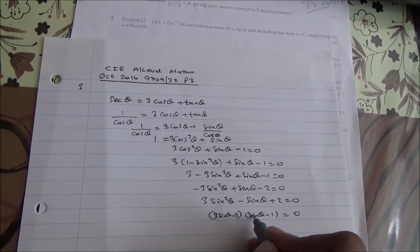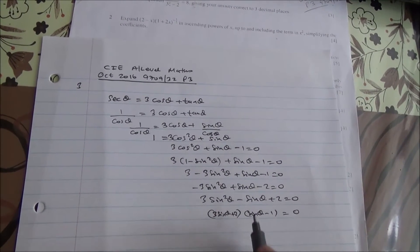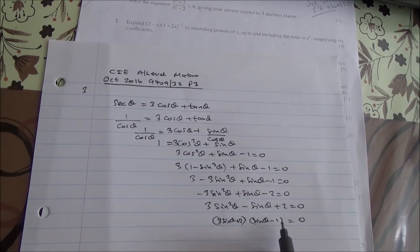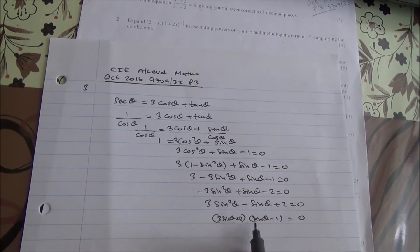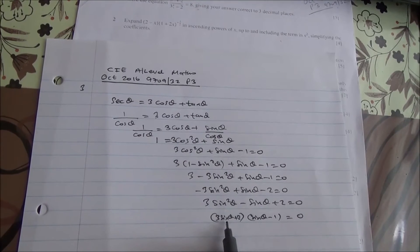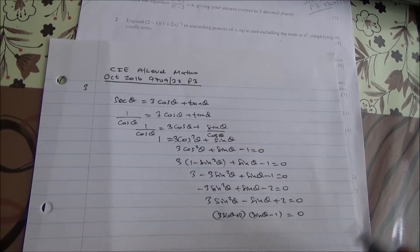And -2sin θ... checking the middle term: -3sin θ + 2sin θ = -sin θ, which is correct.